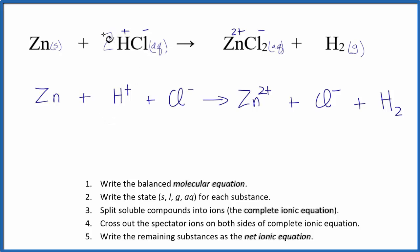We need to take into account the coefficients and the subscripts. This coefficient means there's two HCl molecules, so we'll have 2 of the H plus and 2 of the Cl minus. On this side, this subscript of 2 tells us we have 2 of the chloride ions, so we need to put a 2 in front of the Cl minus.